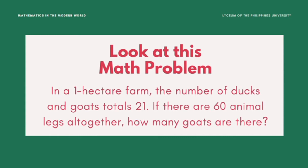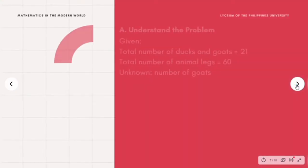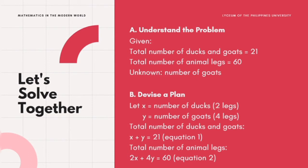In the problem statement, there are two animals — ducks and goats. When these two are added together, they total 21. If there are 60 animal legs altogether, how many goats are there? Our unknown is the number of goats. To put it in a simple and understandable way, I made a list of the given data so you can see the important information: the total number of ducks and goats equals 21, the total number of animal legs equals 60, and our unknown is the number of goats. We already have the breakdown, so we proceed to Step 2: devise a plan.